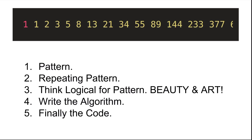So 1 plus 2 is 3, then 2 plus 3 is 5, 5 plus 3 is 8, 8 plus 5 is 13. Continuing: 1 plus 1 is 2, 2 plus 1 is 3, 3 plus 2 is 5, 5 plus 3 is 8. This is the Fibonacci series.